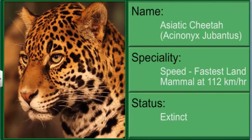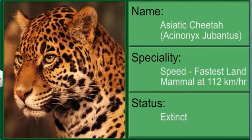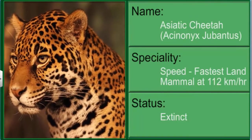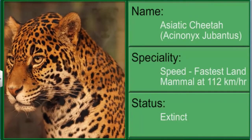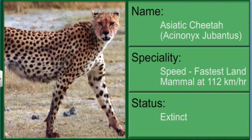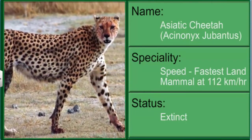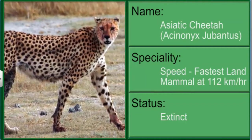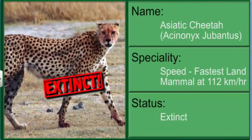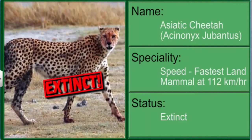The Asiatic cheetah is an exotic cat with distinguishing teardrop markings on its face. It was once found throughout Asia. It became extinct in India in 1952 and is nearly extinct in other parts of the Asian continent due to loss of habitat and prey.